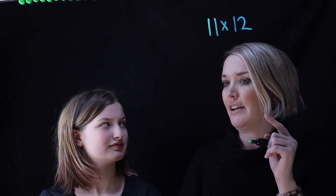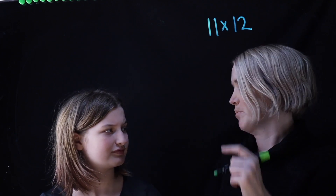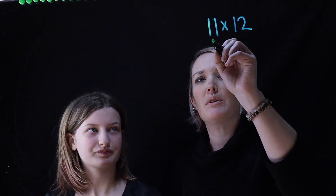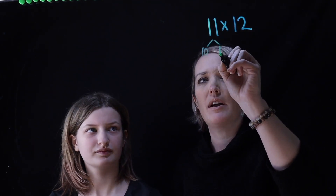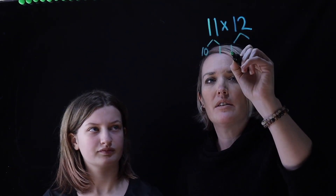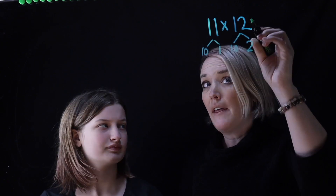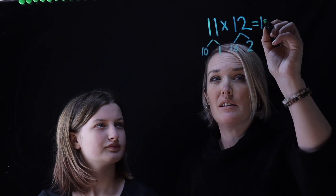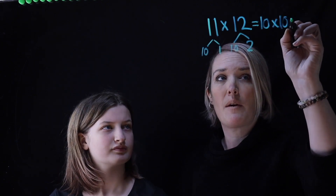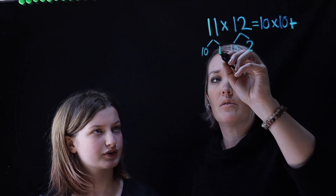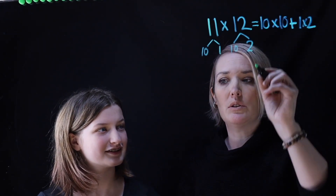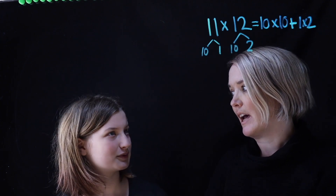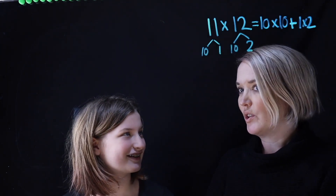Hi, everyone. Today Anna's here. She's going to talk to us about 11 times 12. Now, Anna, some kids like to split both of these numbers up. So let me show you what they do — they go 10 and 1, and 10 and 2, and then they say it's 10 times 10 plus 1 times 2. So they only get 102 for that. That's not right.